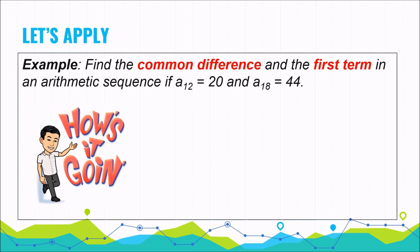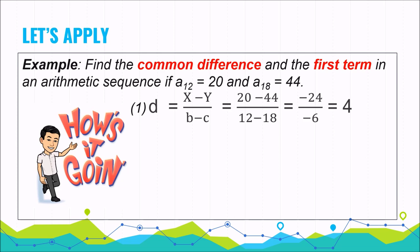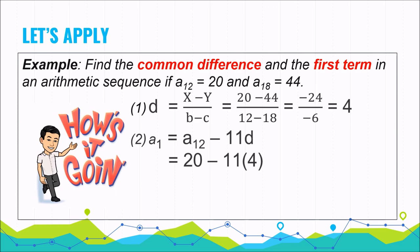Example: find the common difference and the first term if a sub 12 equals 20 and a sub 18 equals 44. First, the common difference is 4 as found before. For the first term, using a sub 12, we need to go back 11 times the common difference. So 20 minus 11 times 4 equals 20 minus 44, which gives negative 24. Our first term is negative 24.